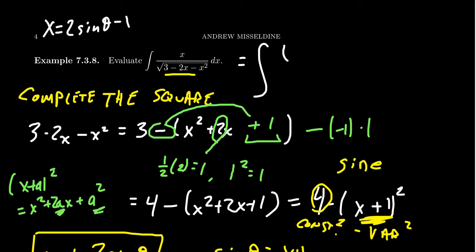So that's what goes in our numerator, 2 sine theta minus 1. The dx, like we saw earlier, was a 2 cosine theta d theta. And then the square root on the bottom was also a 2 cosine theta.